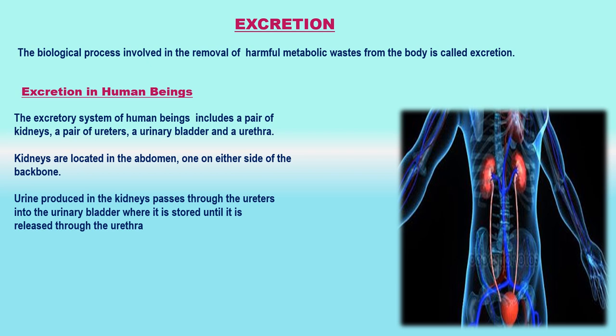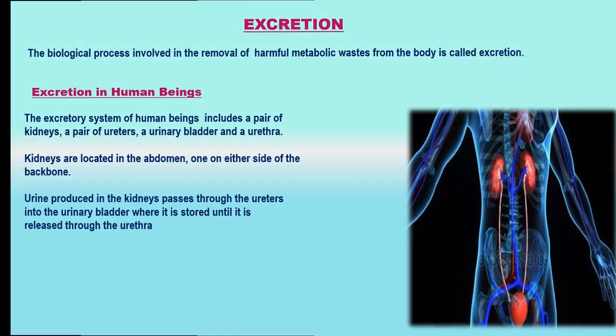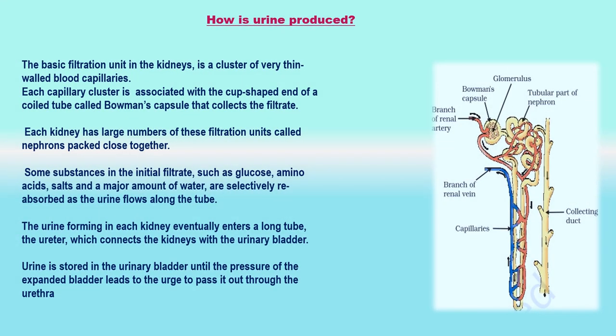Excretion in human beings: The excretory system of human beings includes a pair of kidneys, a pair of ureters, a urinary bladder, and a urethra. Kidneys are located in the abdomen, one on either side of the backbone. Urine produced in the kidneys passes through the ureters into the urinary bladder, where it is stored until it is released through the urethra. The purpose of making urine is to filter out waste products from the blood. Just as CO2 is removed from the blood in the lungs, nitrogenous waste such as urea or uric acid are removed from blood in the kidneys.